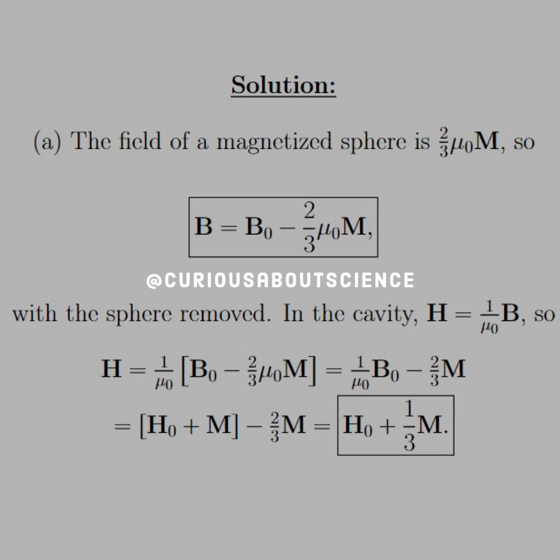And with the sphere removed in the cavity, we have H equal 1 over mu-naught B. So now we just plug in the B that we found and let the algebra sift its way through. We see that H-naught is equal to 1 over mu-naught B-naught. So we substitute that in for B-naught, simplify it through, and we see that H equals H-naught plus 1-third M.